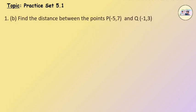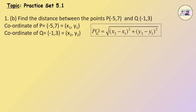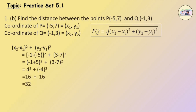Question 1, Sub-question 2: Find the distance between points P and Q. The coordinate of P equals (minus 5, 7), which is (x1, y1). The coordinate of Q equals (minus 1, 3), which is (x2, y2). PQ equals the square root of (x2 minus x1) squared plus (y2 minus y1) squared, which equals the square root of (minus 1 minus minus 5) squared plus (3 minus 7) squared, which equals the square root of 4 squared plus minus 4 squared, equal to the square root of 16 plus 16, equal to the square root of 32, which equals 4 root 2 units.